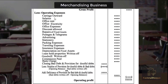The operating expenses include: carriage outward — the expense of delivering goods to the customer — salaries, office rent, office electricity, officer expenses, discounts allowed, fixed asset repair, postage and telegrams, advertising, stationery, packing expense, travelling expense, insurance expense, depreciation on fixed assets, leasehold property write-off, goodwill write-off, commission expense, bank charges, bad debts, and provisions for doubtful debts.